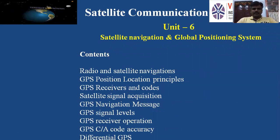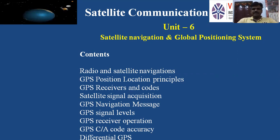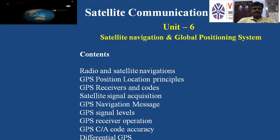Good morning. Today we will start Unit 6: Satellite Navigation and Global Positioning System. We are going to learn the application of satellite communication — GPS, which we use every day. The contents of this unit are: radio and satellite navigation, GPS position location principles, GPS receivers and ports, satellite signal acquisition, GPS navigation message, GPS signal levels, GPS receiver code operation, GPS C/A code accuracy, and differential GPS.